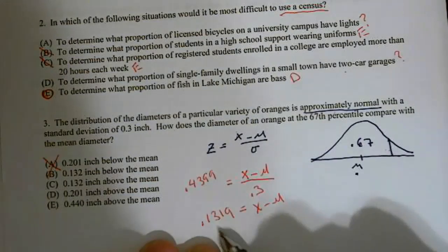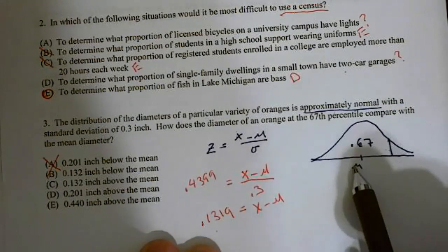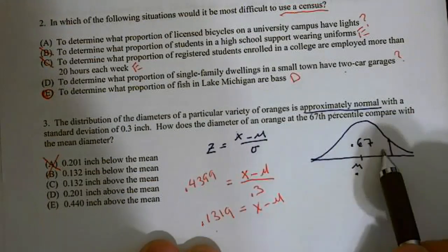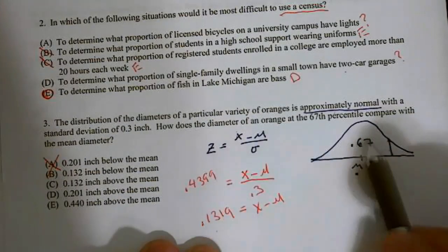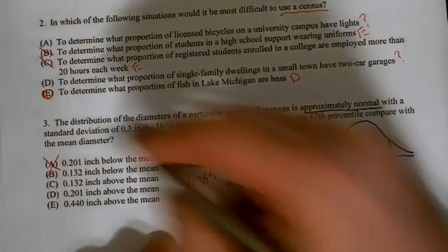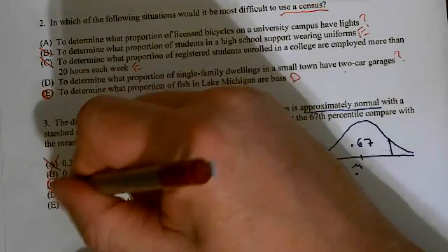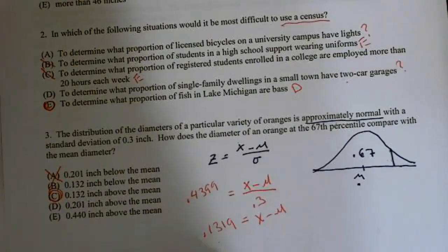So 0.1319 equals x minus mu. So we need to be 0.1319 above the mean, and we know it's above because we drew this graph here, and 67% is above halfway. So in this case, our answer is C. Number three is C.